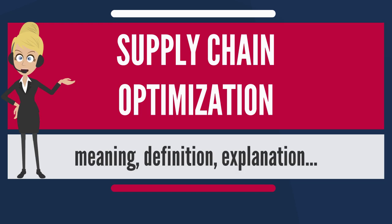Unpredictability in demand is then managed by setting safety stock levels, so that for example a distributor might hold two weeks of supply of an article with steady demand, but twice that amount for an article where the demand is more erratic. Universally accepted statistical methods such as standard deviation and mean absolute deviation are often used for calculating safety stock levels.